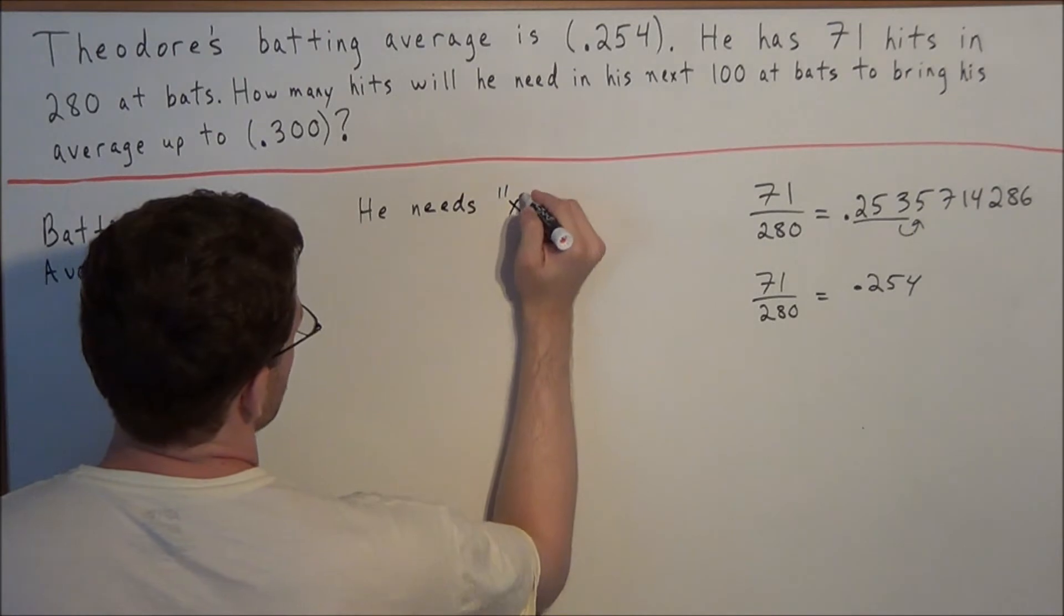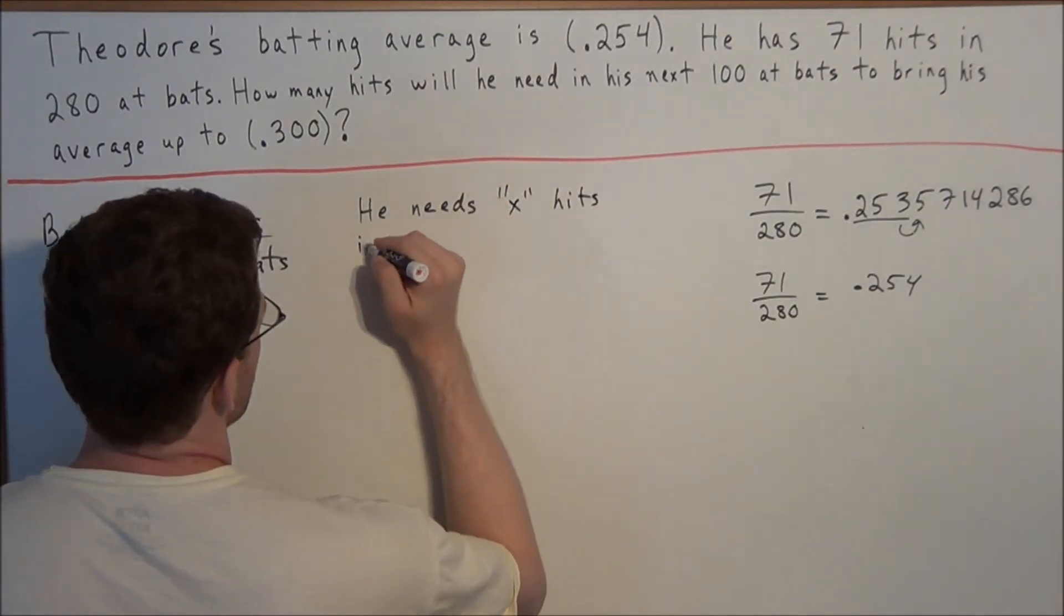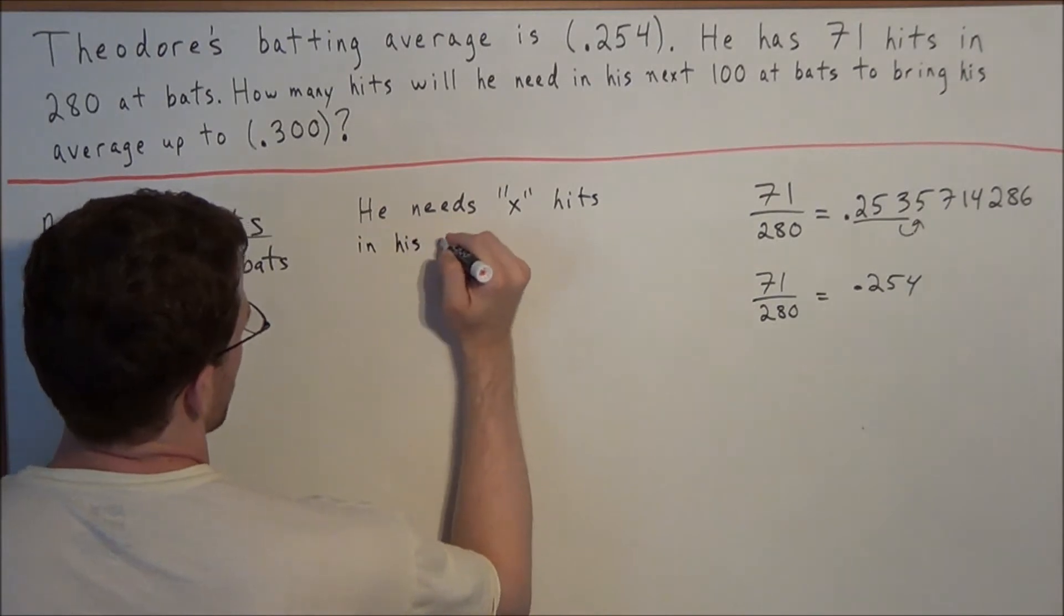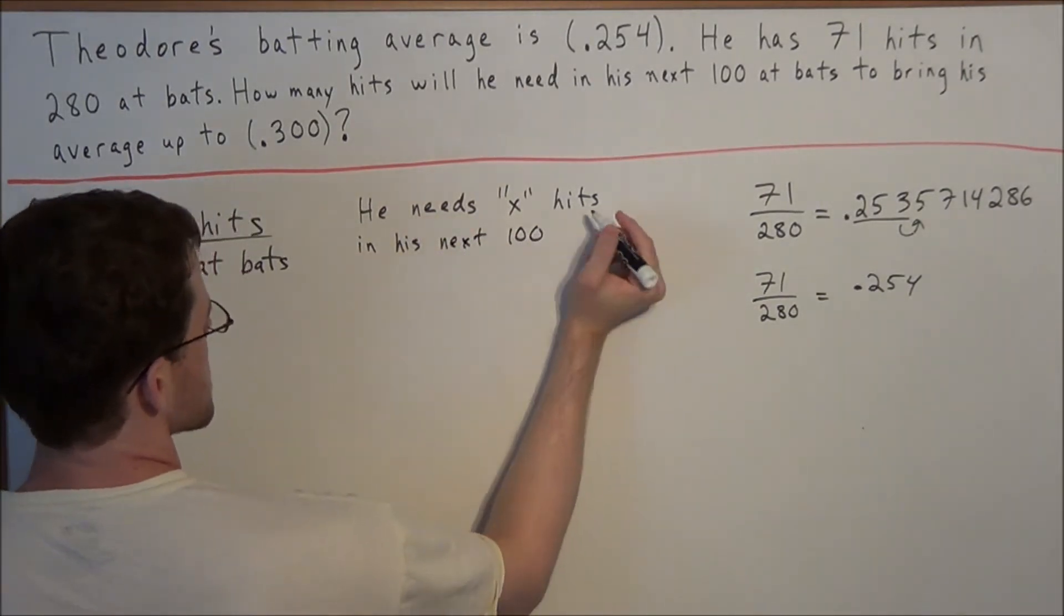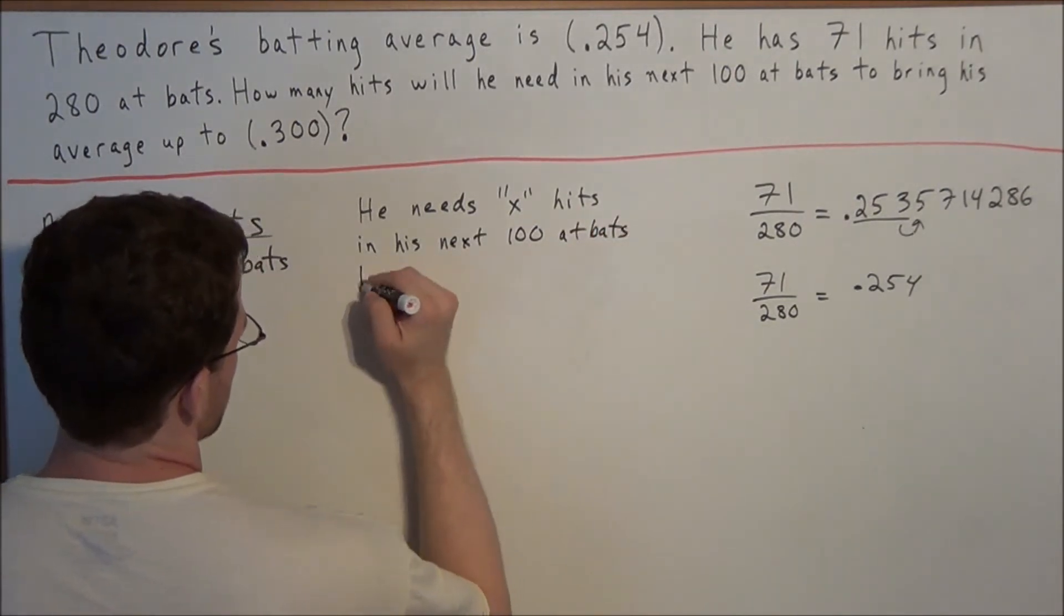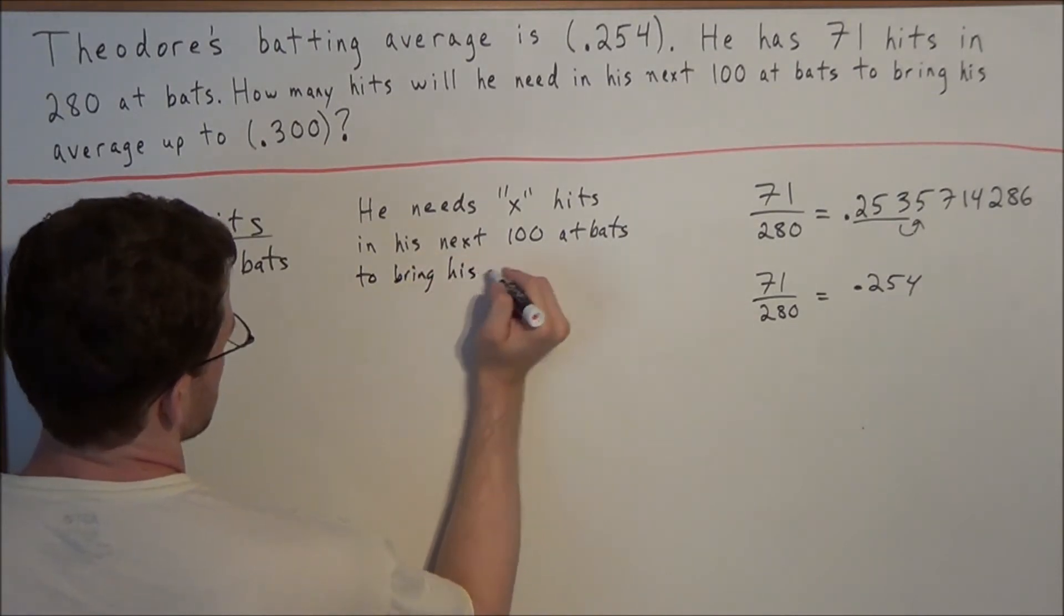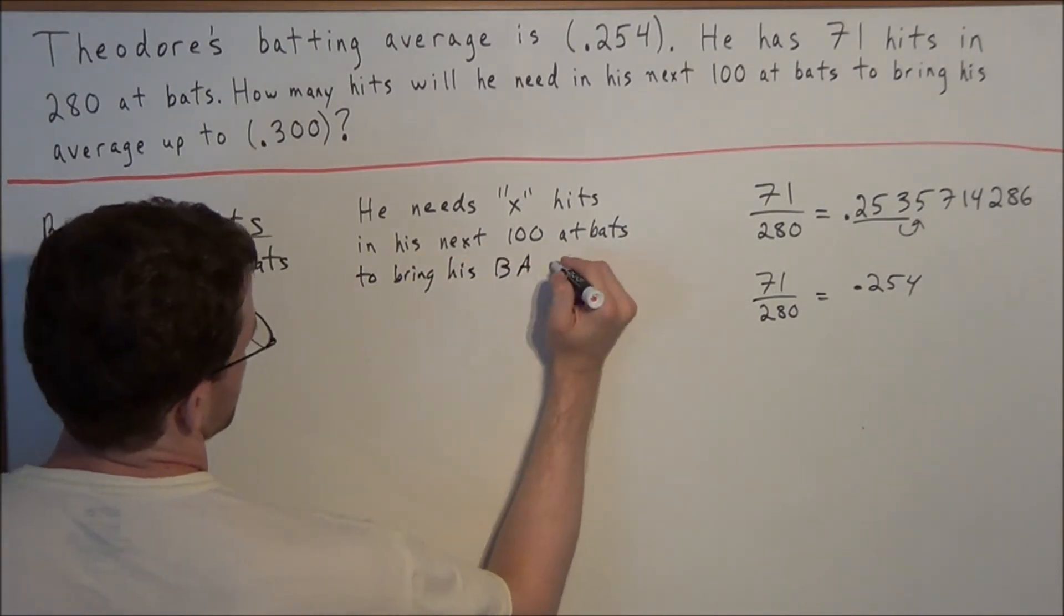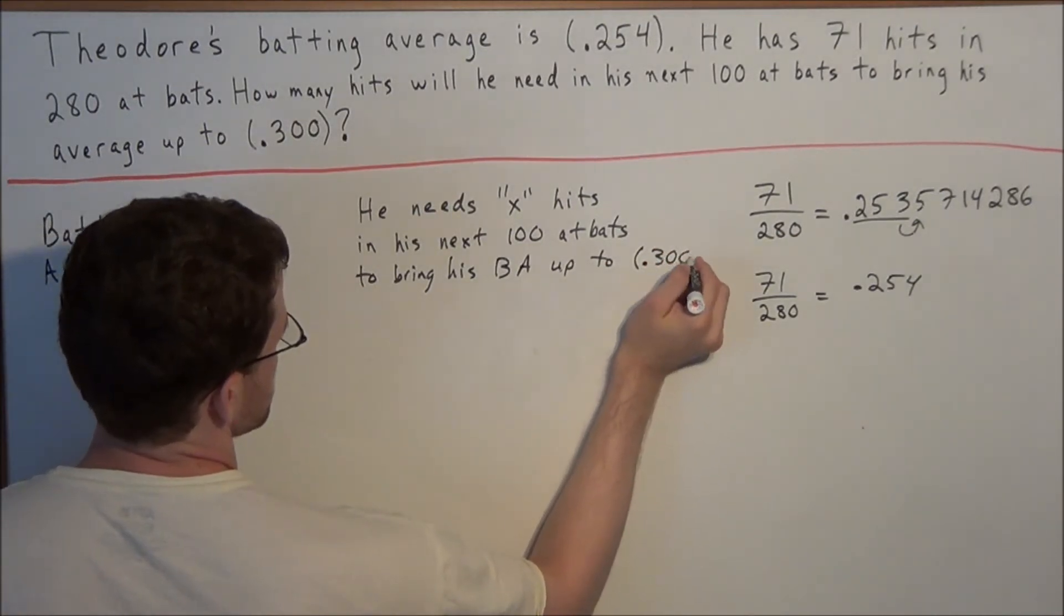He needs x hits in his next 100 at bats to bring his average, and I'll put BA for batting average, up to 300.